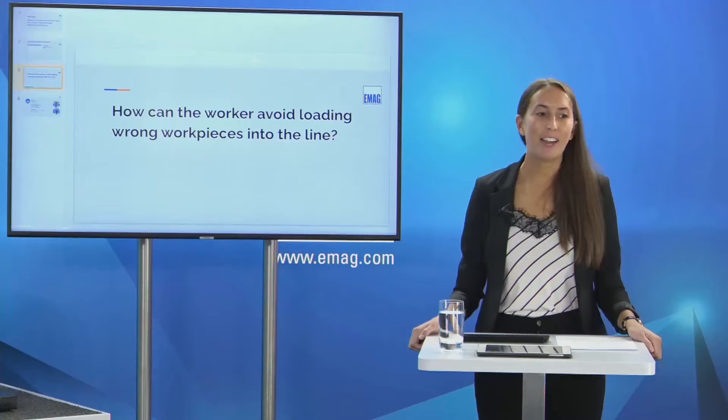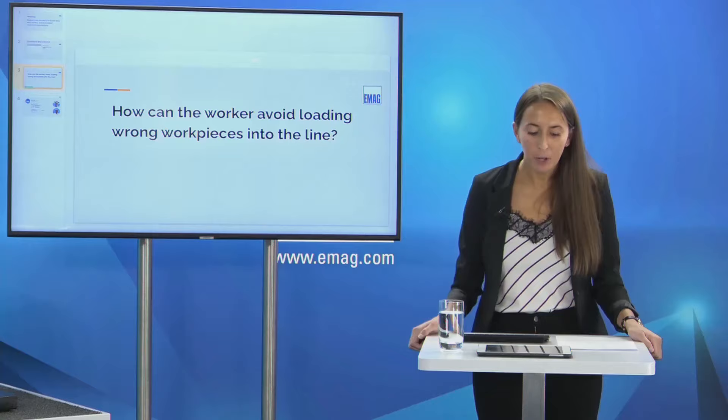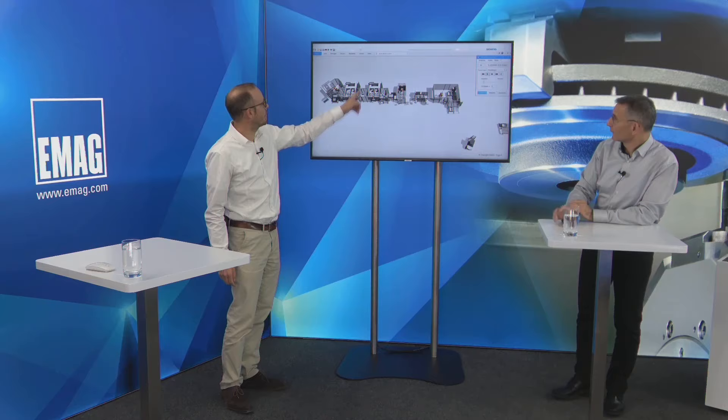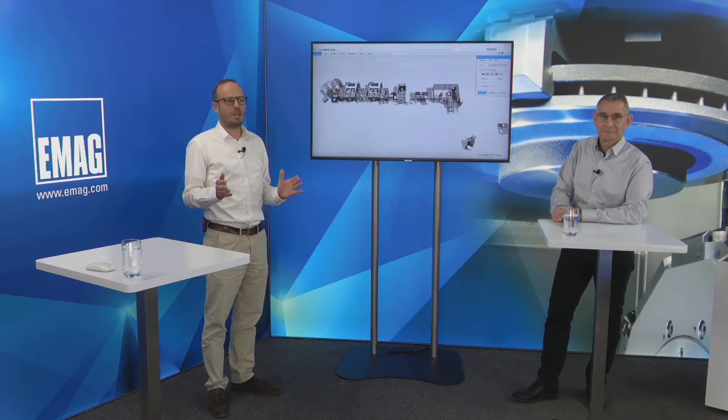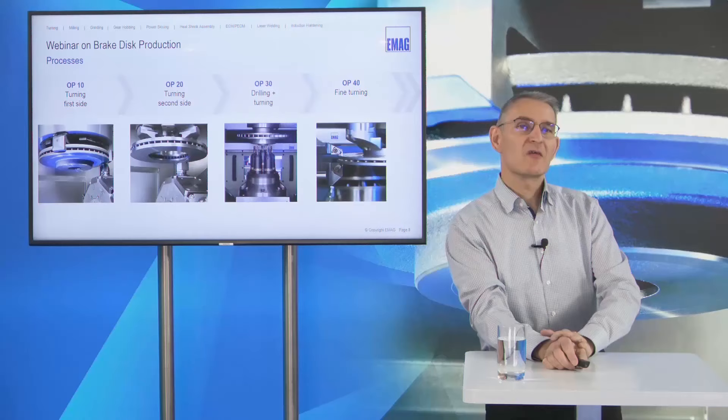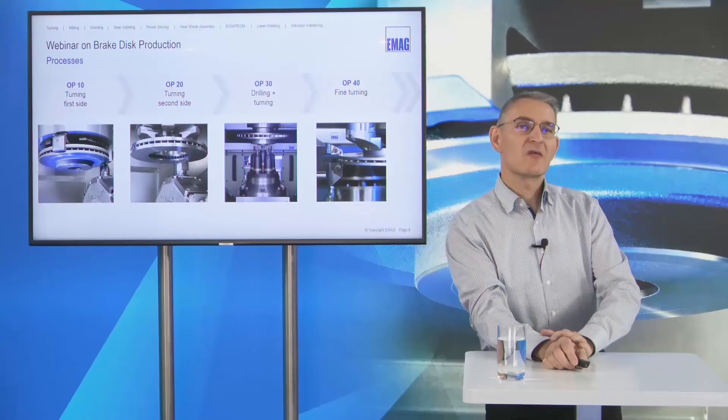Another question: how can the worker avoid loading wrong workpieces into the line? As you can see in the line overview, the gantry system includes an SPC station with grippers and sensors that detect the diameter of the brake disc. If the wrong diameter is loaded, the system compares it to what it should be, and if it's wrong, it will not be introduced into the line. Therefore it's covered.